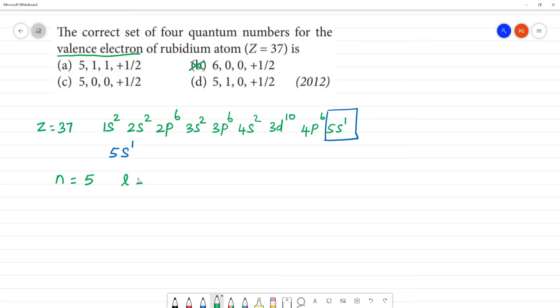Azimuthal quantum number: S is 0, P is 1, D is 2, F is 3. So L is equal to 0.